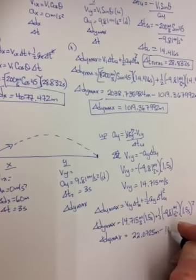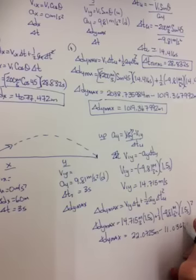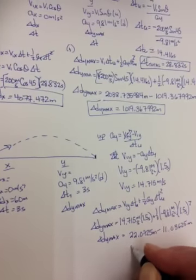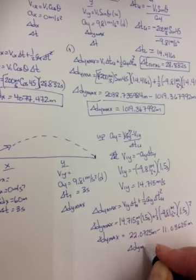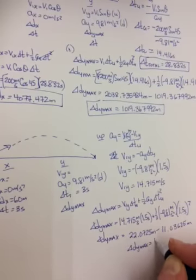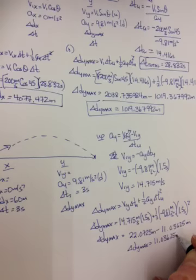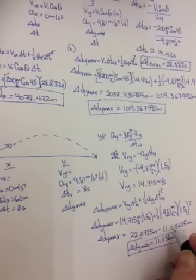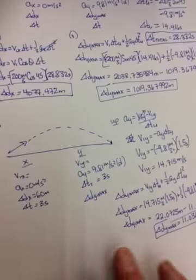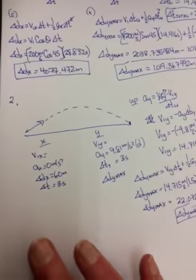The first term is 22.0725 meters minus brackets 4.905 times 2.25. Second term is 11.03625 meters. And lo and behold, when you subtract them, you get 11.03625. So use this as the check. If you don't get the second term half the first term, then it means you screwed up your time.